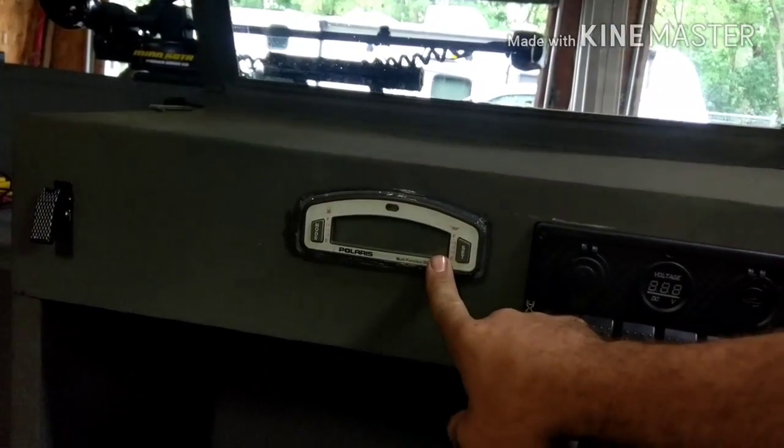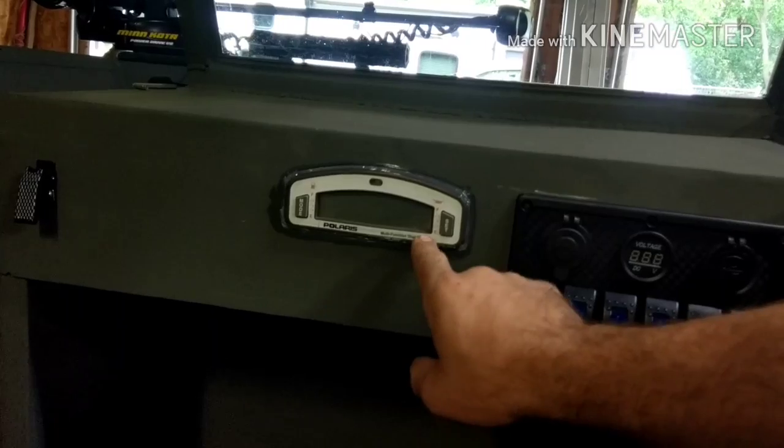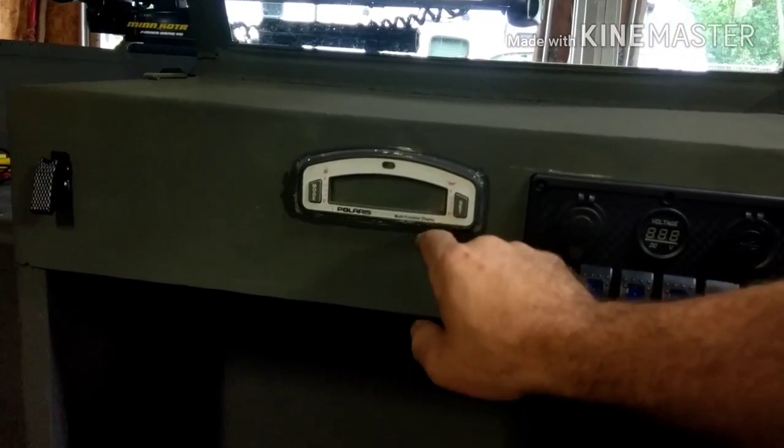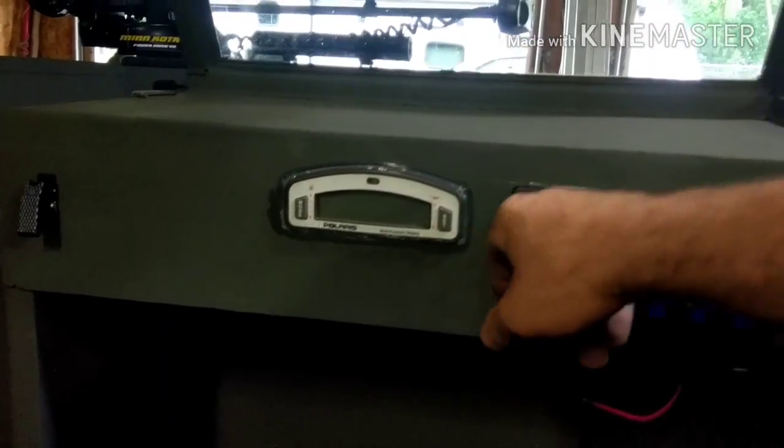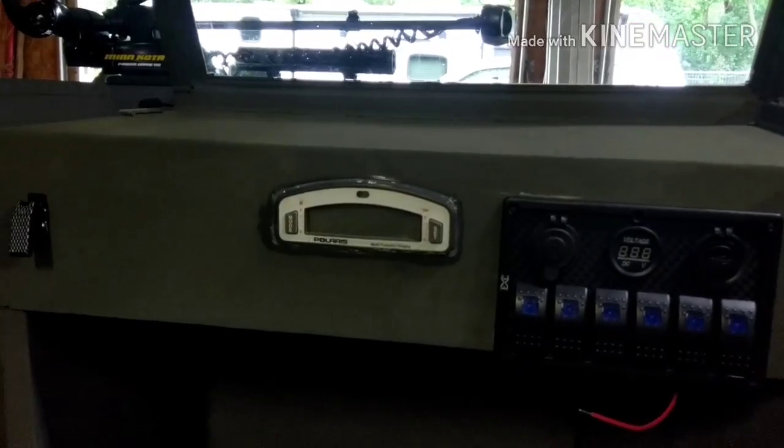This is the dash from the jet ski. That is my tachometer, gas gauge, hour meter. It also has the time on there, so that will be pretty sweet.